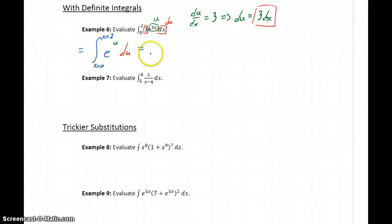So we'll integrate. The integral of e to the u will just be e to the u, and then we'll want to evaluate that from x equals 0 to x equals 2. Again, with definite integrals, we don't have to worry about that plus c, because when you subtract the two functions, those will cancel out.